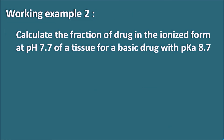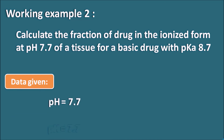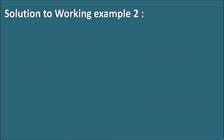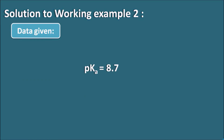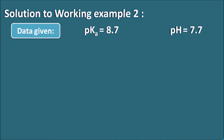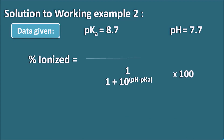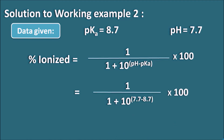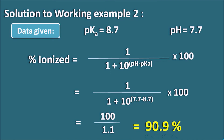Working Example 2: Calculate the fraction of a basic drug in ionized form at pH 7.7 in tissue, with pKa 8.7. Using the weak base formula: percentage ionized = 1 / (1 + 10^(pH − pKa)) × 100. Substituting: 10^(7.7 − 8.7) = 10^(−1) = 0.1. So percentage ionized = 1 / (1 + 0.1) × 100 = 100 / 1.1 = 90.9%. This basic drug is 90.9% ionized at pH 7.7.